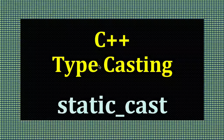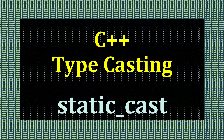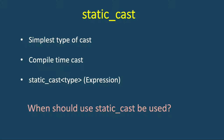In this video we will study about static_cast. Static_cast is the simplest type of cast in C++ and it's a compile-time cast. Its syntax is static_cast, then you mention the type, and then the expression or the variable.